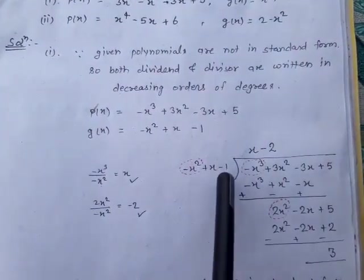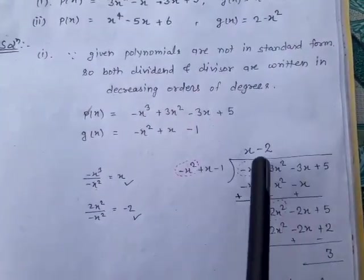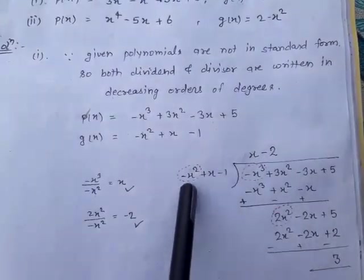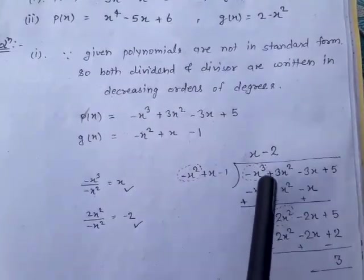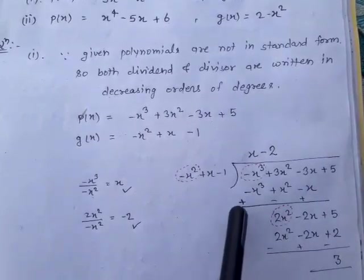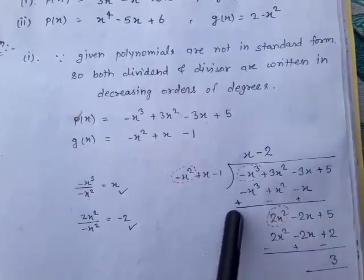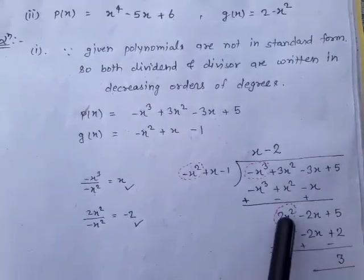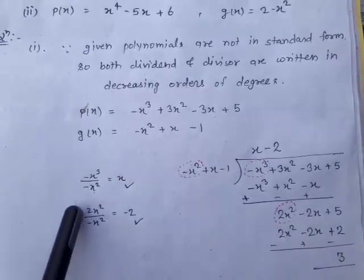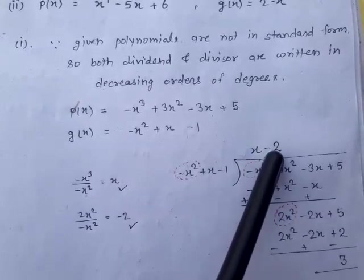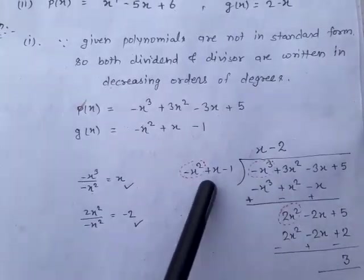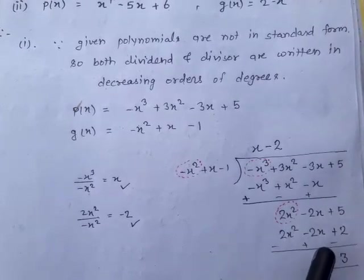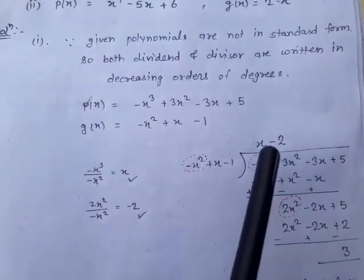Dividing −x³ + 3x² − 3x + 5 by −x² + x − 1. The first term: −x³ ÷ −x² = x, so the first quotient term is x. Multiply x by (−x² + x − 1) to get −x³ + x² − x. Changing signs and cancelling, we get 2x² − 2x + 5. Next, 2x² ÷ −x² = −2, so the second quotient term is −2. Multiply −2 by (−x² + x − 1) to get 2x² − 2x + 2. After cancellation, the remainder is 3 and the quotient is x − 2.